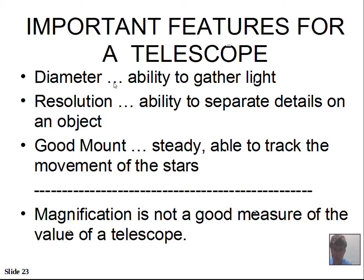It's the most important parameter, other than the mounting, which needs to be solid, not flimsy. The diameter feeds into resolution and the ability to see details on an object. It's a little different than magnification — you might magnify something quite a bit, but if your telescope doesn't have the inherent ability to resolve objects, to see them as separate objects, then you'll just magnify a blur.